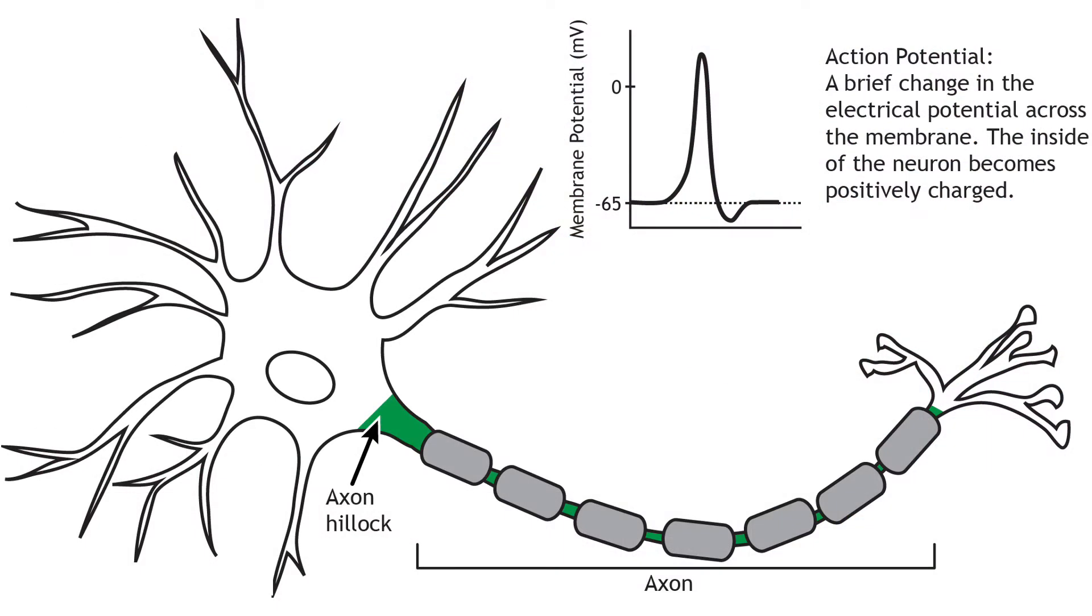As we have covered, when an action potential propagates down the axon to the presynaptic terminal, the electrical signal will result in a release of chemical neurotransmitters that will communicate with the postsynaptic cell.